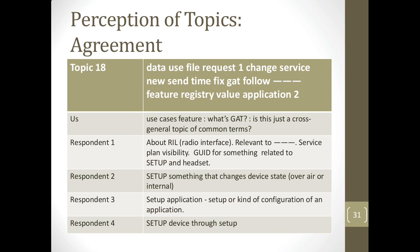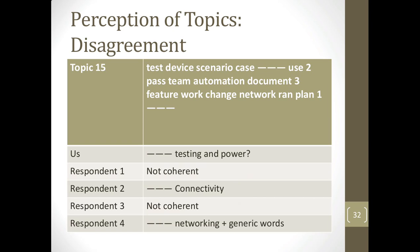In terms of topics, there were cases of agreement: for a topic with words like data, use, file, request, which we thought was 'use case features,' respondents all said 'setup' — each mentioning it was setup for a device or application. But there were also disagreements: for a topic with test, device, scenario, pass, team, automation, which we labeled as testing and power, one respondent said it wasn't coherent, another said connectivity, a third said it wasn't coherent, and a fourth said it related to networking and generic words. Two agreed, two disagreed — showing general disagreement in some topics.